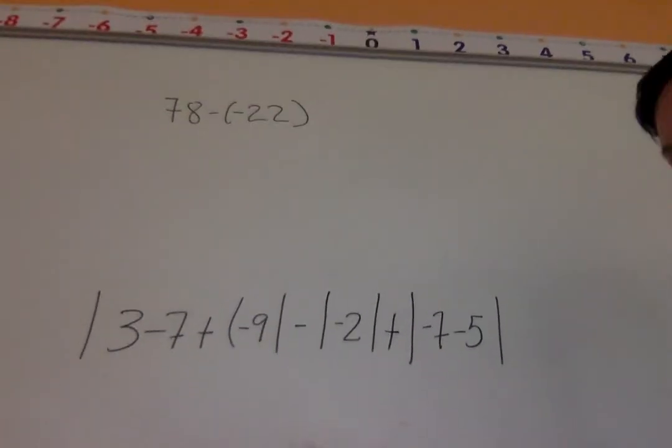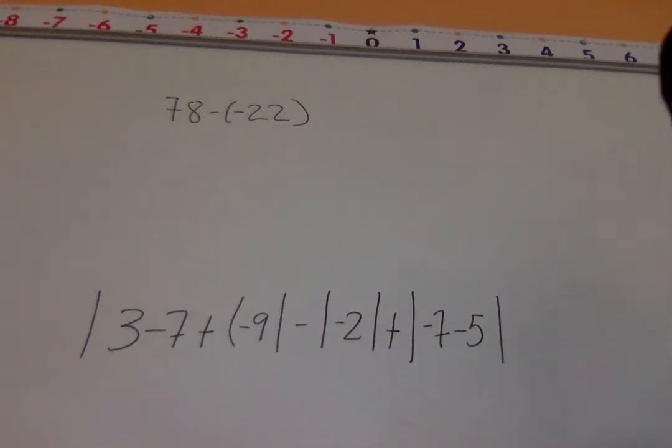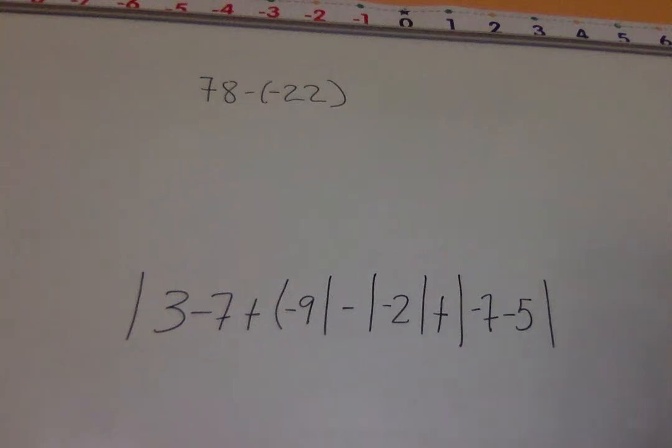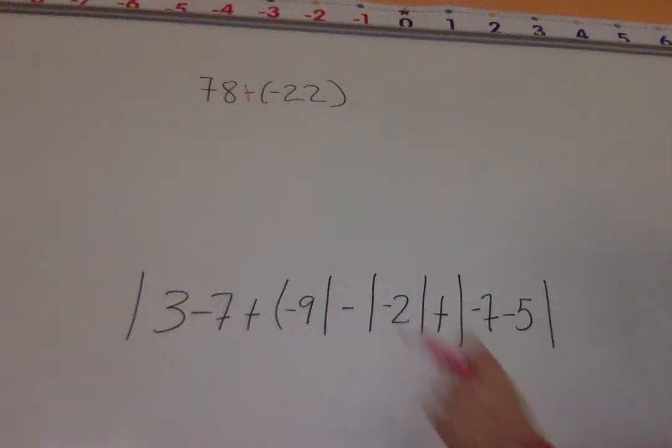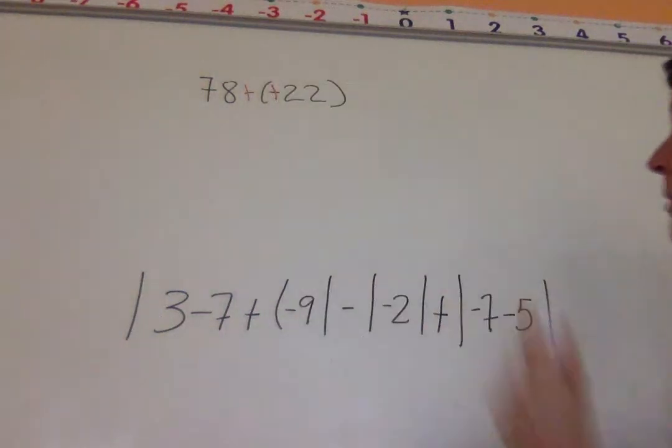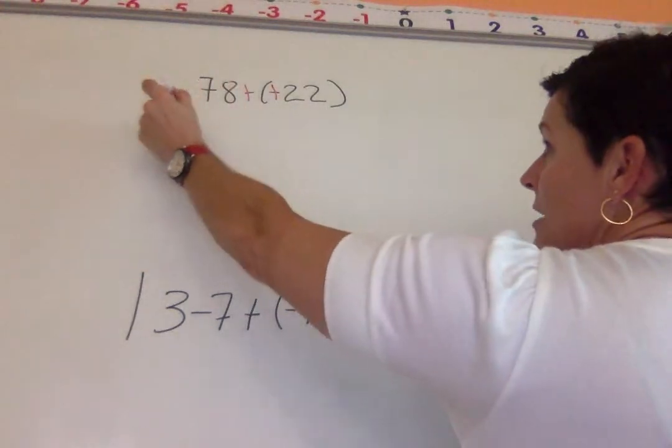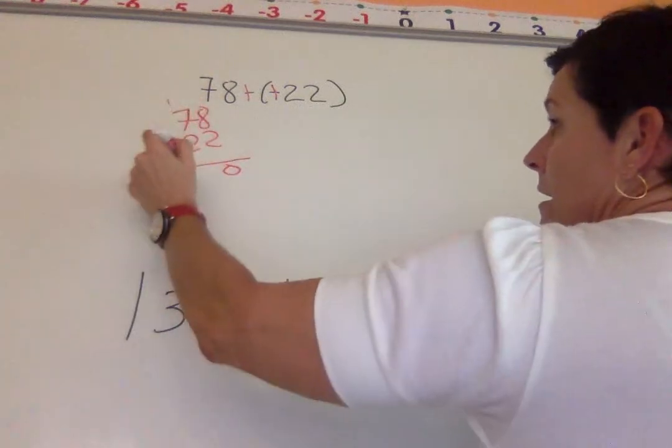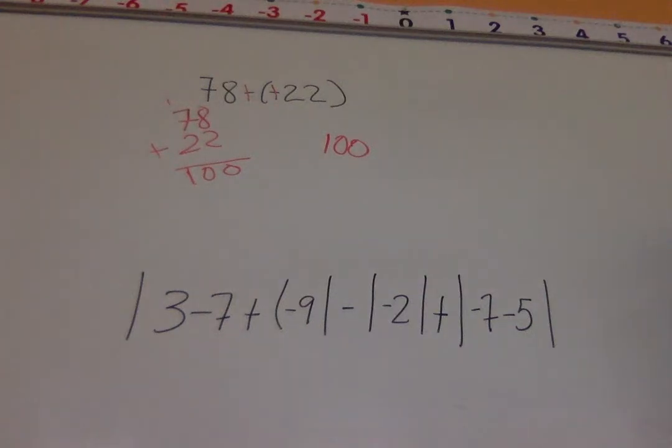Before we do the big one, we'll do this one. 78 minus negative 22. Once again, change subtraction to plus. Change negative 22 to its opposite. Both signs are the same now. And I can just add 78 and 22. I'm adding them. My answer is 100.